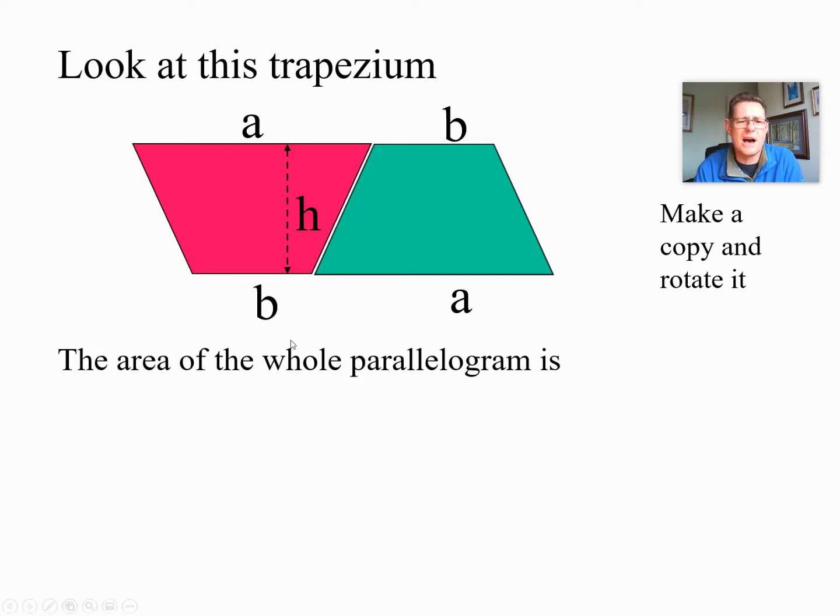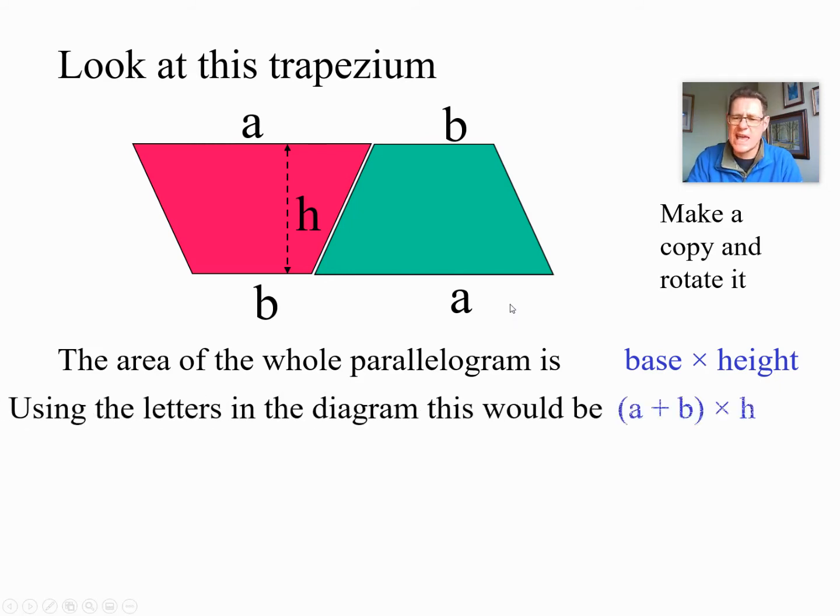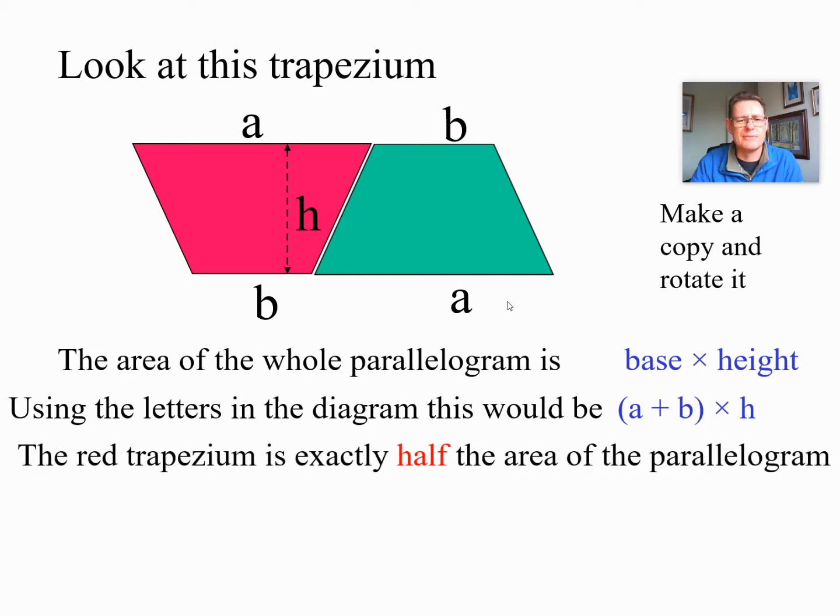They are the base times the height. Now the base here is the whole thing, the B and the A, the whole base added together. So we take the base and the height. We use A and B to represent that large long base. We add them together. Notice the brackets because we want to add them together first. We times it by the height and we get our answer.